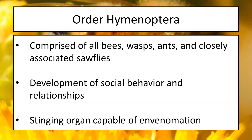Another trait shared among several members of this group — and the one we all kind of dread — is their ability to sting. Many of these insects have a stinging organ capable of delivering venom. Not all of them sting; some will only use their stinger for getting their own food, like the cicada killer. Some members have also developed specific caste members whose only job is to act as a defensive unit for their colony, hive, or nest.